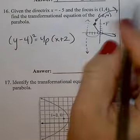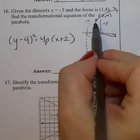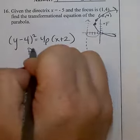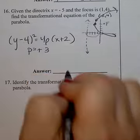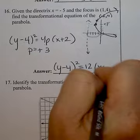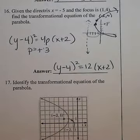Now what is the p? P is the distance from the vertex to the directrix or the vertex to the focus. It's 3. And it's a positive 3 since it opens up to the right. Final answer after multiplying 3 by 4.